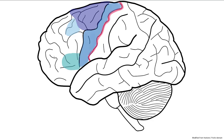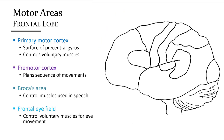The frontal eye field is a region anterior to the premotor cortex that controls voluntary eye movements, such as scanning an area. Involuntary movements originate in other regions, notably the occipital cortex and superior colliculi of the midbrain. To summarize the motor regions: within the frontal lobe, just anterior to the central sulcus, the primary motor cortex controls body muscles; the premotor cortex plans the movement sequence; Broca's area controls the muscles used to form words; and the frontal eye field controls voluntary eye scanning.